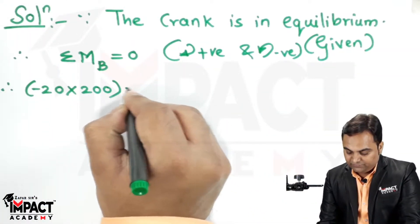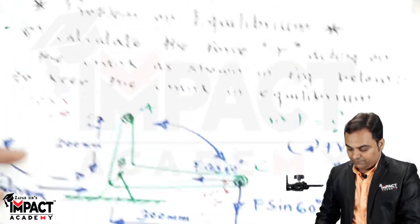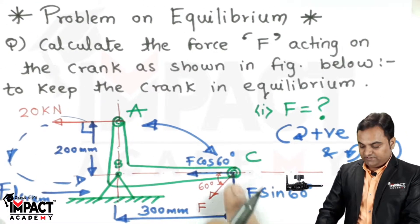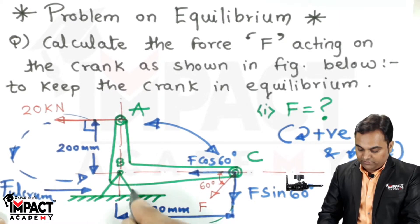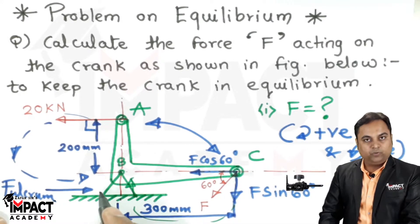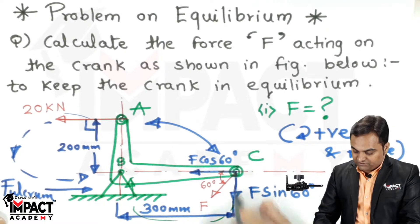F sin 60 is acting in the downward direction, so when I take the moment about point B, it would be in a clockwise direction, which is positive. So F sin 60 into 300 equals zero.